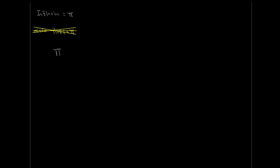Inflation is the percent change in the average price level. That delta symbol just means 'a change in.' We can work out our percent change as: the price in year one minus the price in the initial year, all over the price in the initial year. This gives us our inflation rate as a decimal. If we want it as a percentage, we multiply by 100.